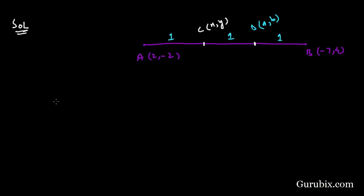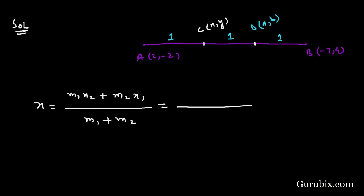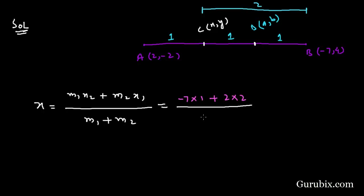We shall find the x-coordinate of point C using the section formula: x = (M1·X2 + M2·X1) / (M1 + M2). For point C, M1 is 1 and M2 is 2. So x = (1×(-7) + 2×2) / (1+2) = (-7 + 4) / 3 = -3/3 = -1.